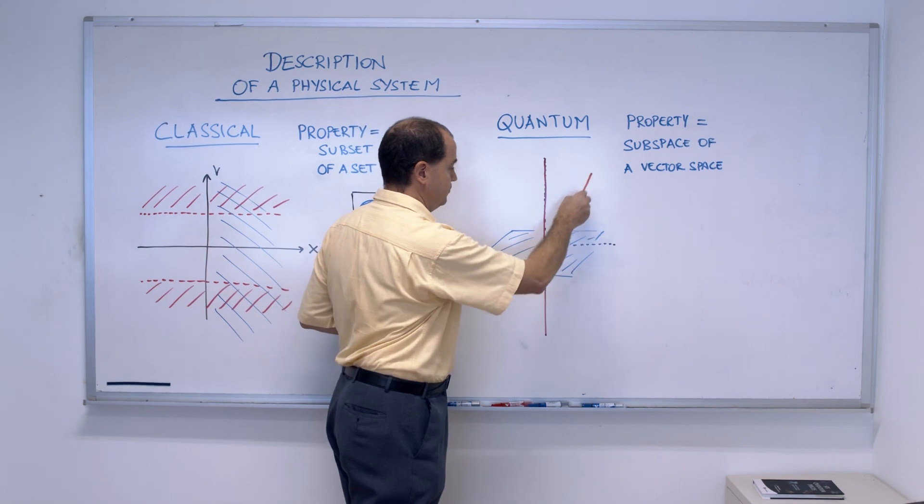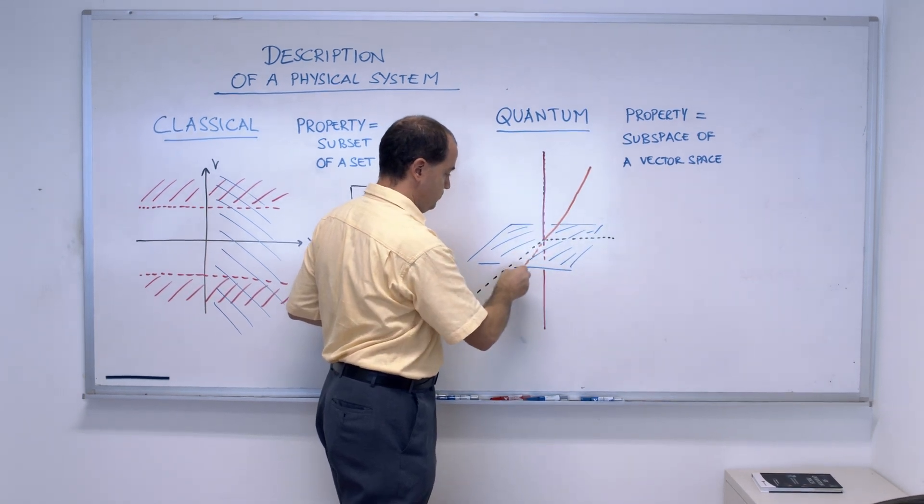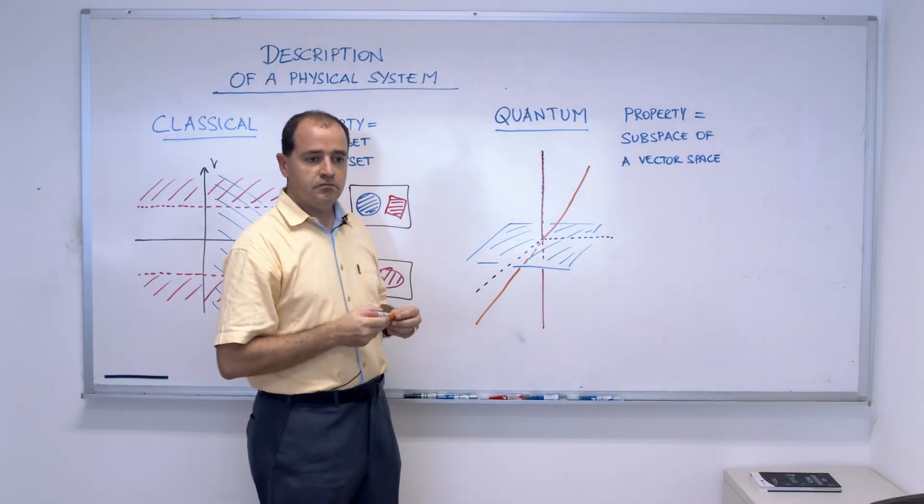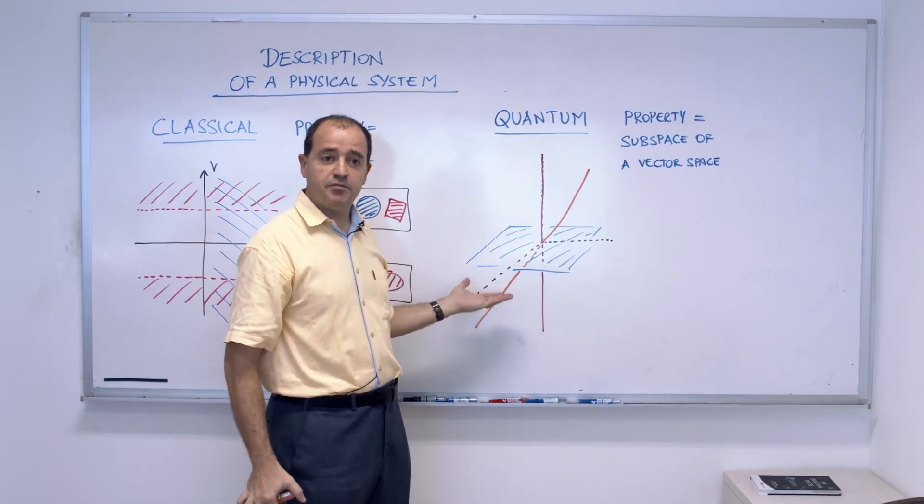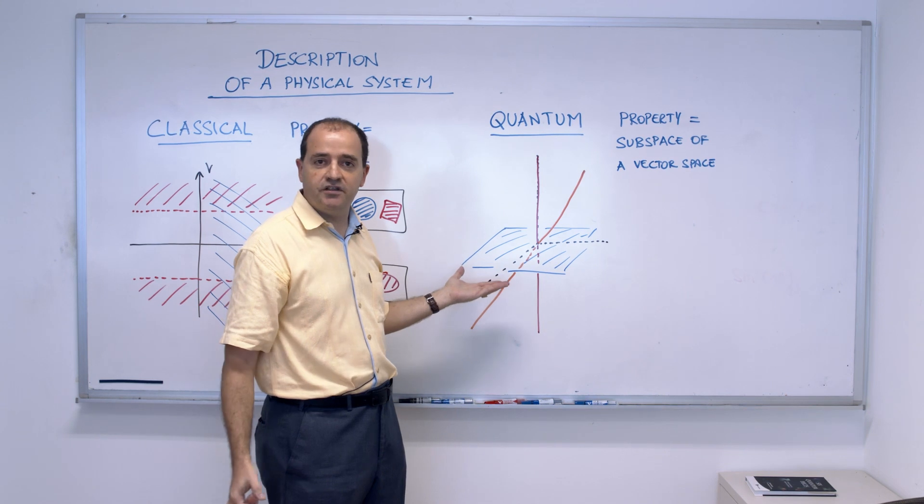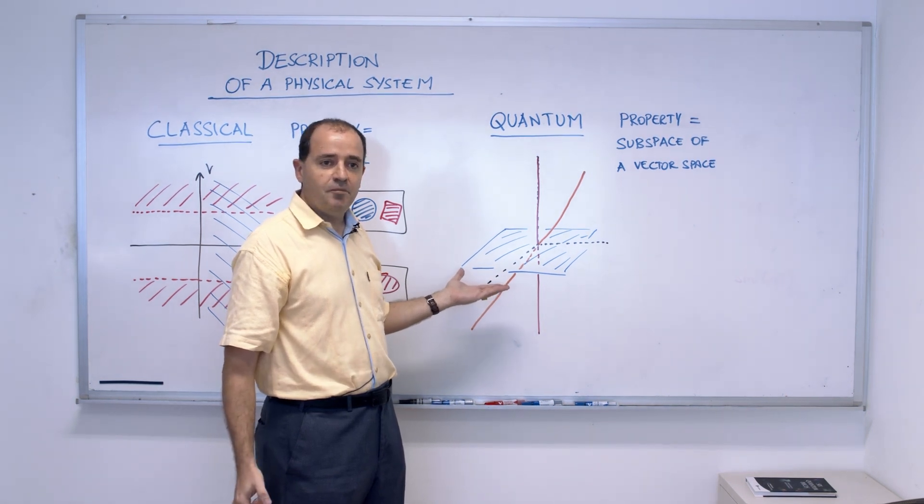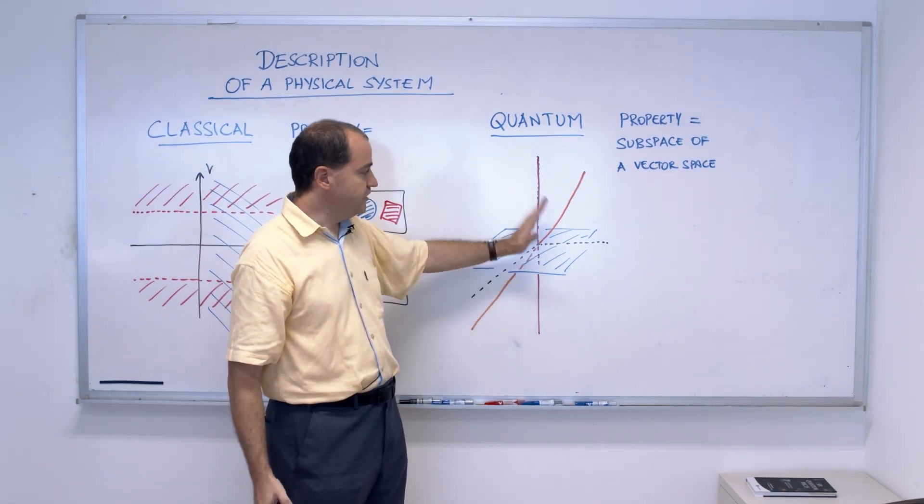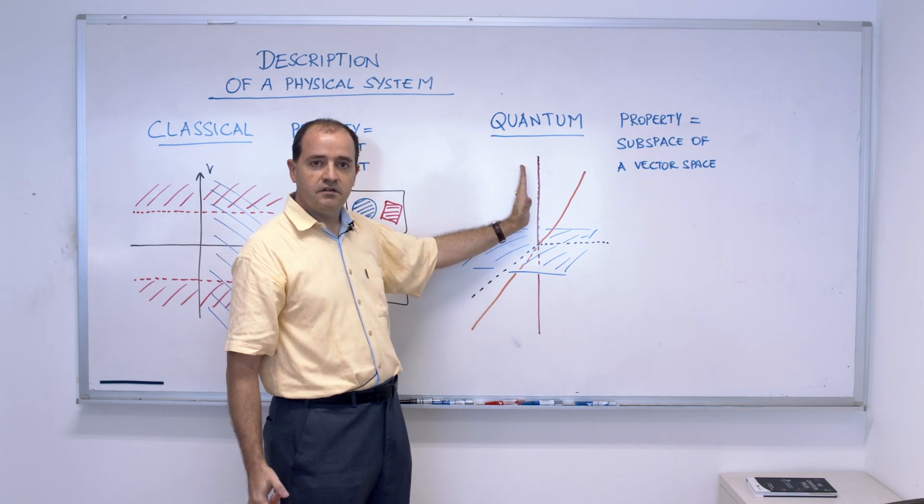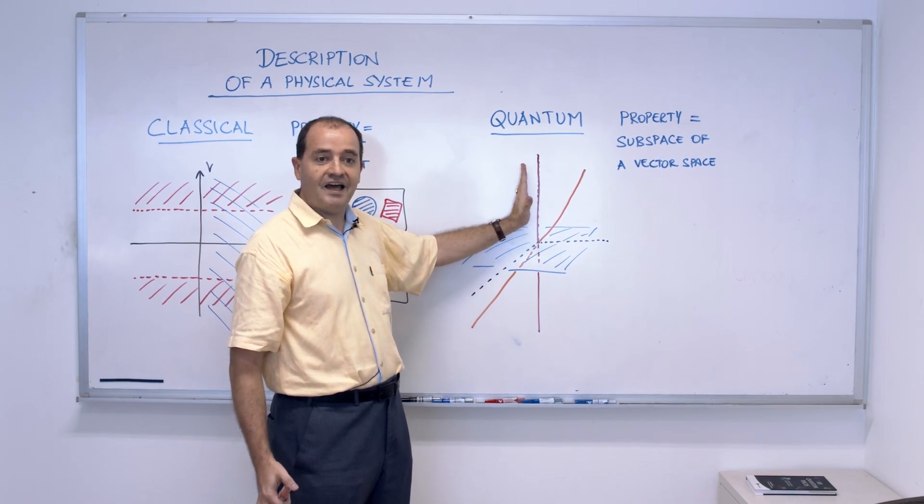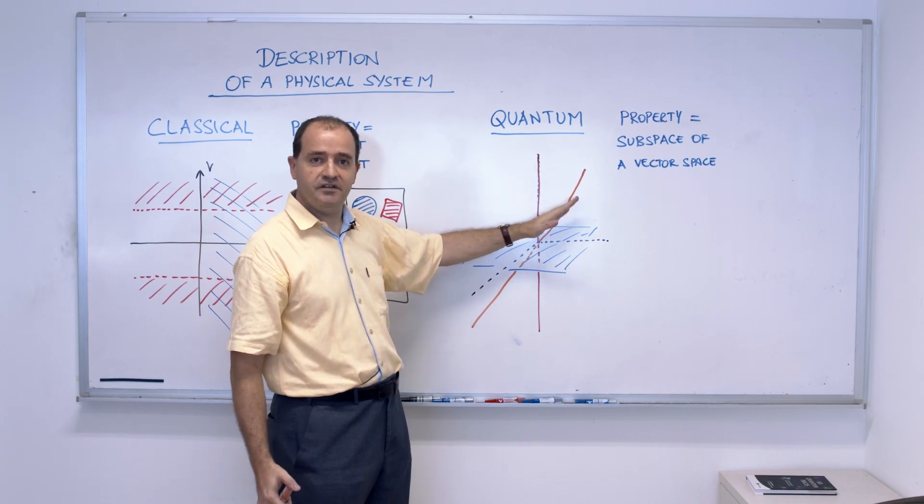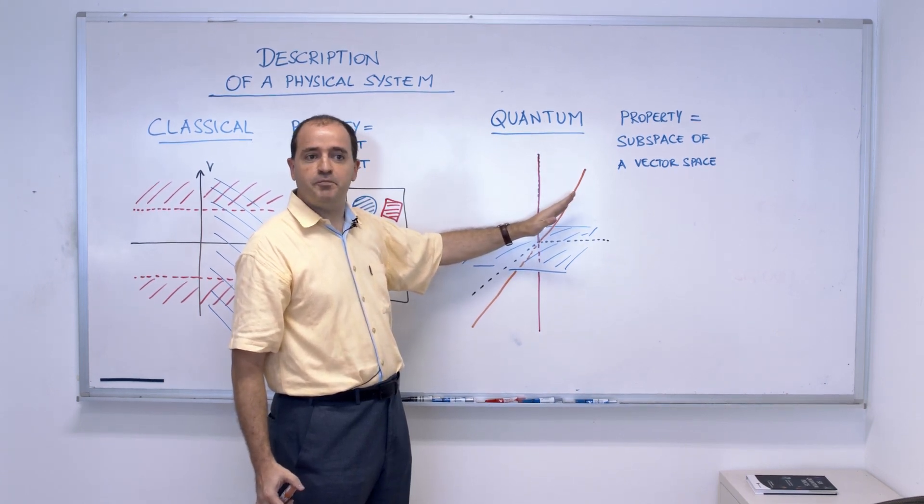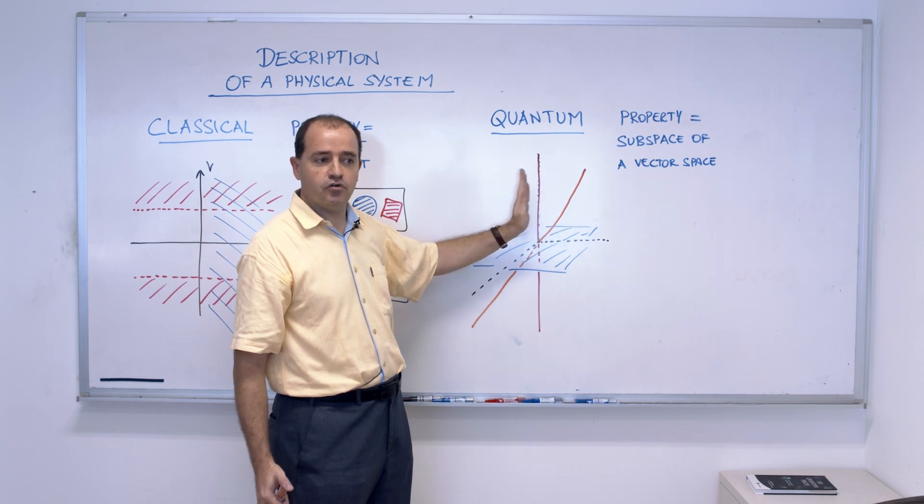What about this property? This line is also one-dimensional subspace, so it will be associated to some property, but it's not orthogonal to this plane, and it's not orthogonal to this line. So it's a different property, but obviously not the same, it's a different subspace, but it cannot be perfectly distinguished because it's not orthogonal to either.